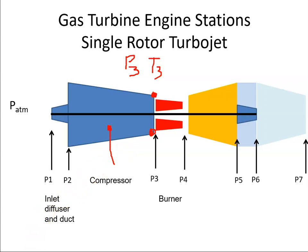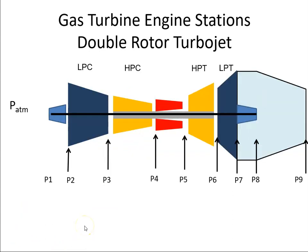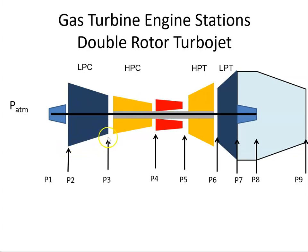That covers engine stations on this type of engine. There could be more — for example, we could have a low pressure compressor and a high pressure compressor, so we'd have P2, P3, P4, P5, and so on up to P9.